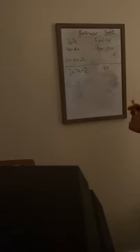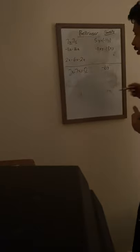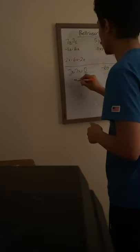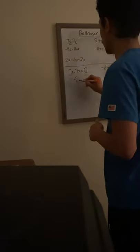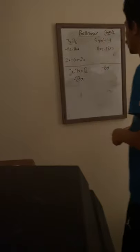Now we have negative 11a minus 16a. Negative 11 minus 16 is negative 27, so our answer would be negative 27a.